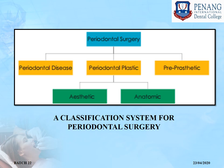This is a classification system for periodontal surgery. Periodontal surgery can be broadly classified into three types: first, to treat periodontal disease; second, periodontal plastic surgeries; and third, pre-prosthetic surgeries. Periodontal plastic surgeries can again be classified as those done to treat aesthetic concerns or treat anatomic defects.